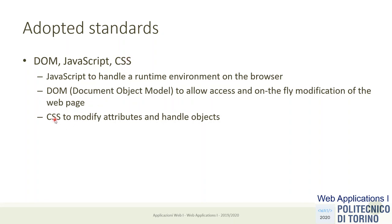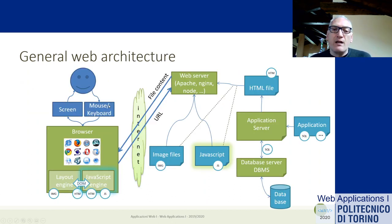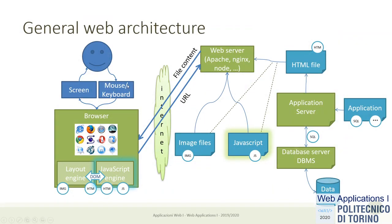CSS style sheets also come into play — we'll dedicate a section to those because they are usually strictly in conjunction with the DOM, so DOM and CSS cannot really be separated as technologies. Inside the browser, the main modification is that we now have a JavaScript engine — the interpreter for the JavaScript language. Different browser developers implemented their own JavaScript engine, and the JavaScript engine is able to execute JavaScript code.